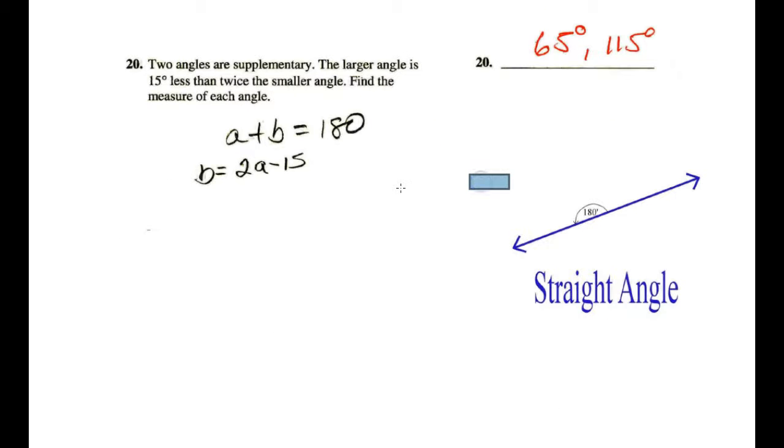Our last example is two angles are supplementary. Now, if we have a right angle, that's 90. If we have complementary, which are two 90s, you end up with what is called a straight angle, which is 180. So, two angles are supplementary. Here, the key word is that they're going to equal 180. So, there's my first equation.